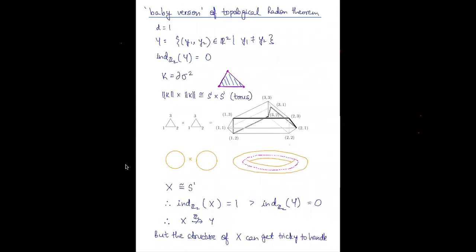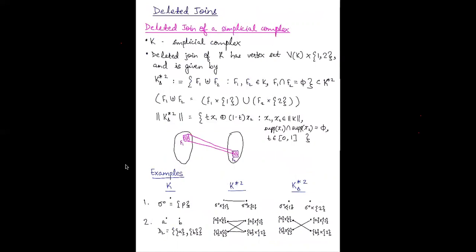With this deleted product construction, the formulation almost gets us the answer, but the structure of X is still a bit tricky to handle — it gets complicated even for very small values of d. So instead we turn to a new construction: deleted joins. Our ideas and approach to the problem remain the same, but deleted joins turn out to be easier to handle than deleted products.